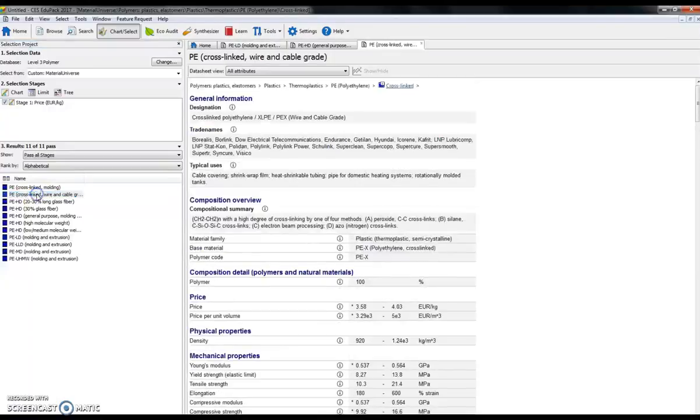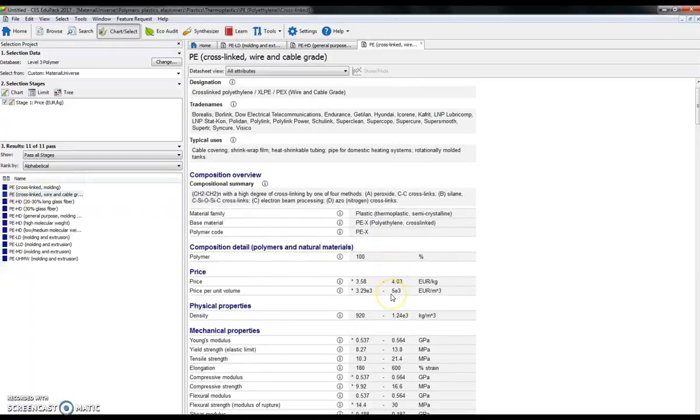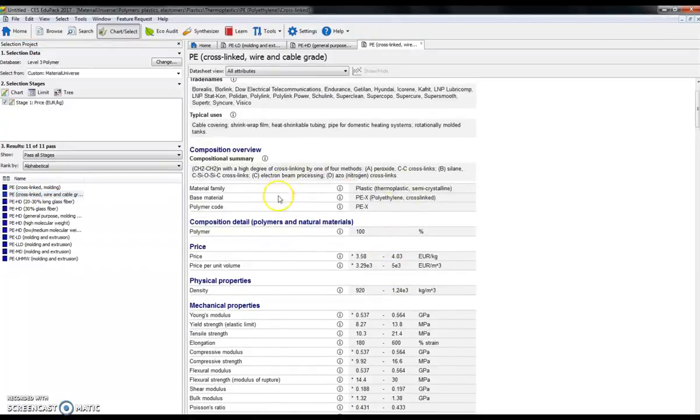Again, we can go and look at a different one. We'll say polyethylene cross-linked. And again, all the information is there. Now this is an awful lot of information to take in.